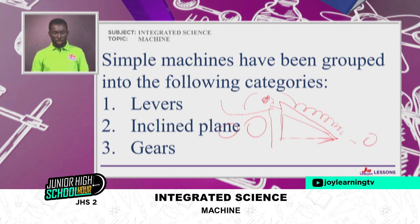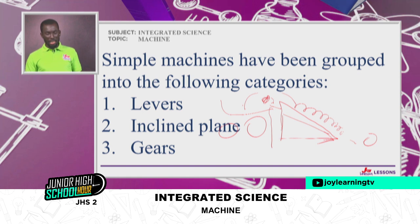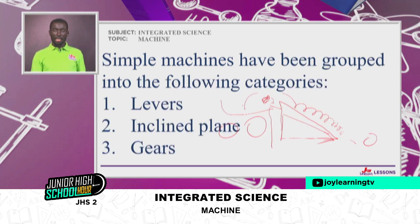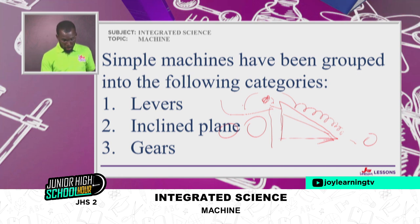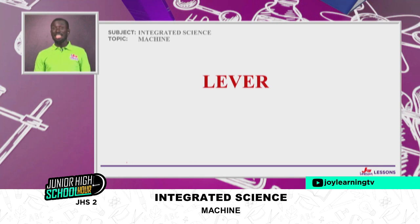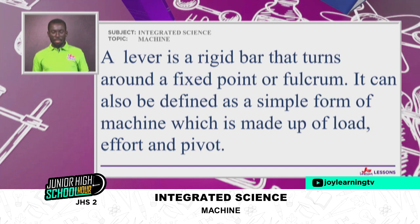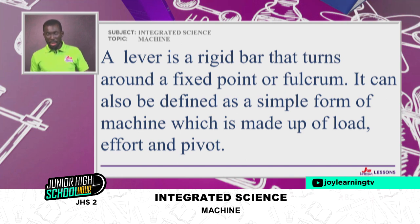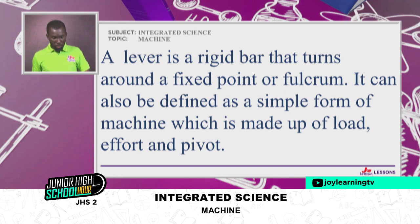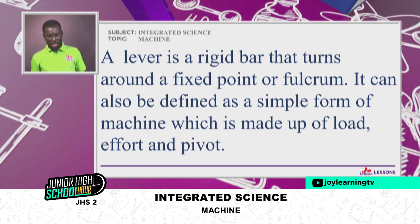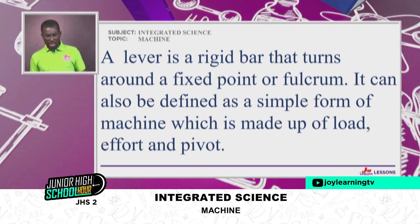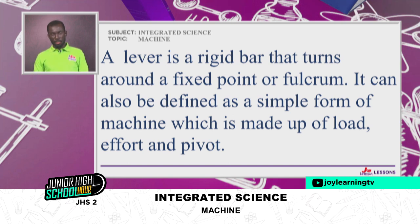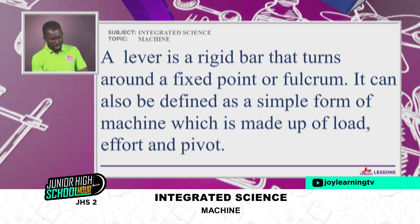Simple machines have been grouped into the following categories: levers, inclined planes, gears, wheels and axles, and screws. We are doing levers and the inclined plane now; the gears will come with the calculations of machines. A lever is a rigid bar that turns around a fixed point called the fulcrum. Every lever is a rigid bar which rotates around a fixed point. It can also be defined as a simple form of machine made up of load, effort, and pivot.